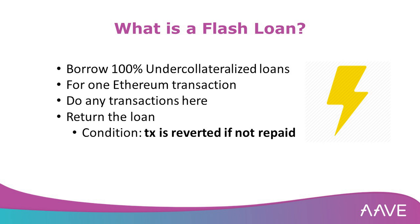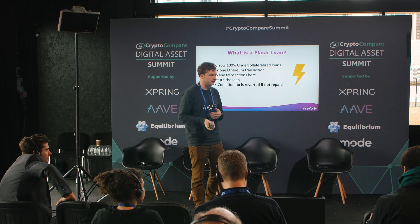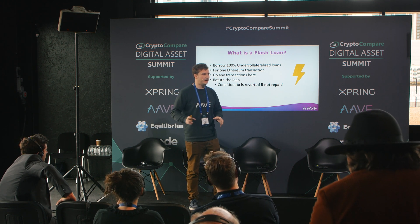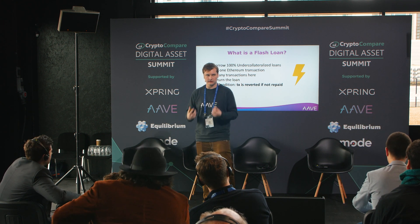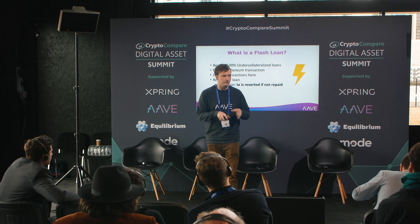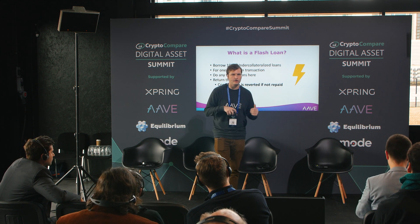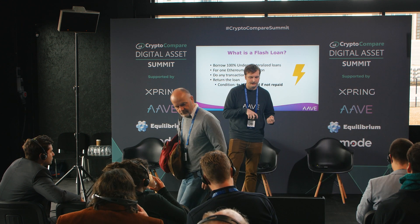The main thing about flash loans: usually when you borrow in DeFi, you use collateral because there's no trust — you deposit ETH or another asset and borrow stablecoins, which you use to lever up or as working capital. What differentiates a flash loan is that you are borrowing 100% under-collateralized, but the restriction is that you must borrow and return the loan within the same Ethereum block. If your code does not return the loan, the entire transaction gets reverted.